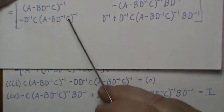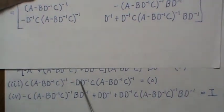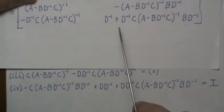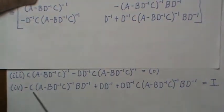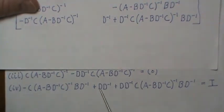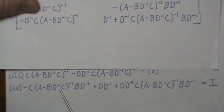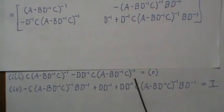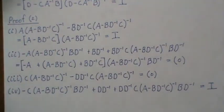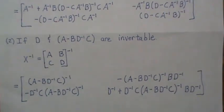Then we take [C D] times the first column — that's simply this inverse giving the identity, so we have that matrix minus the same thing, giving zero. Taking [C D] times the second column: C is there, D multiplied in gives the identity, so we have that matrix minus the same thing at zero, leaving the identity. So both off-diagonal blocks are zero and diagonal blocks are identity — these results are true.